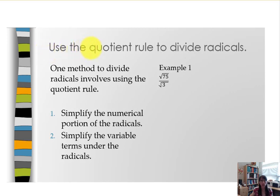In this video, we're going to see how to use the quotient rule to divide radicals. The quotient rule is one technique that could be used. Our first step is to simplify the numerical portion of the radicals. Our second step will be to simplify the variable terms under the radical, if there are any.